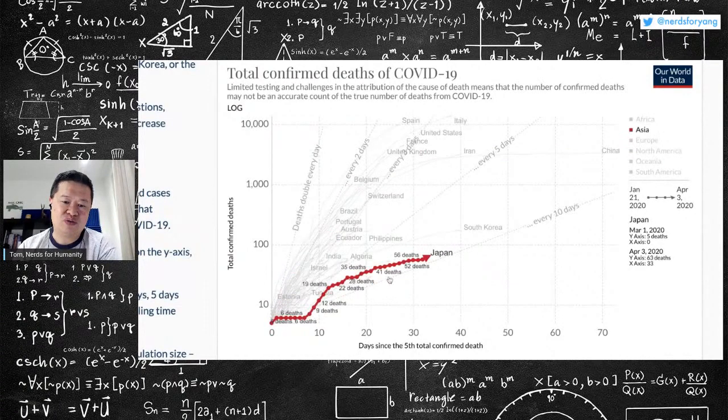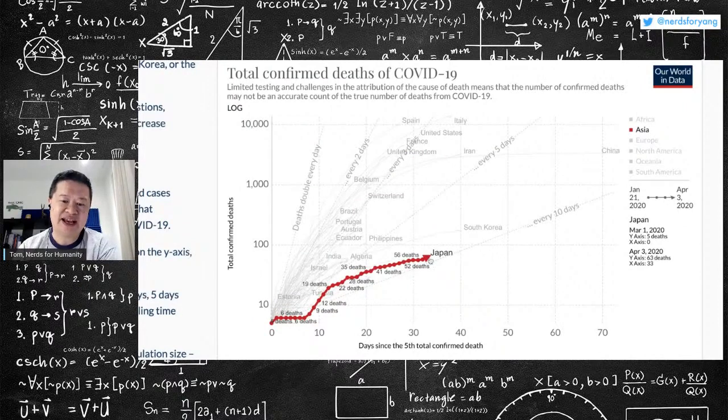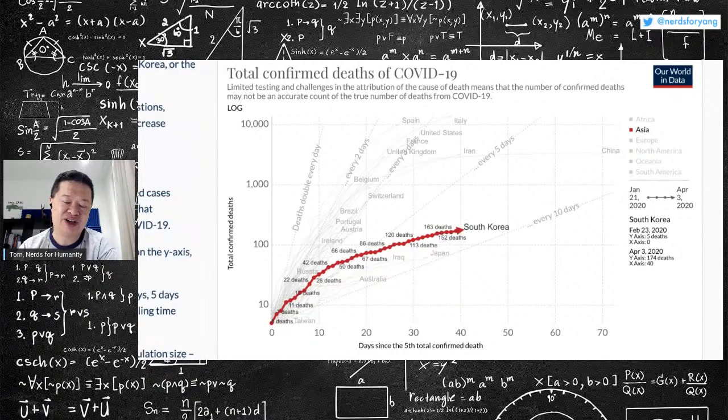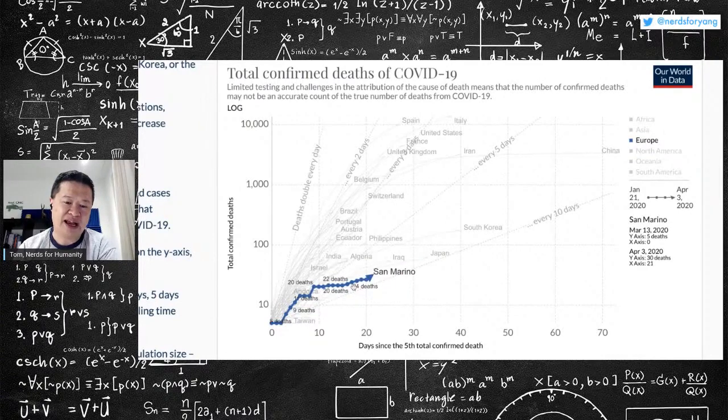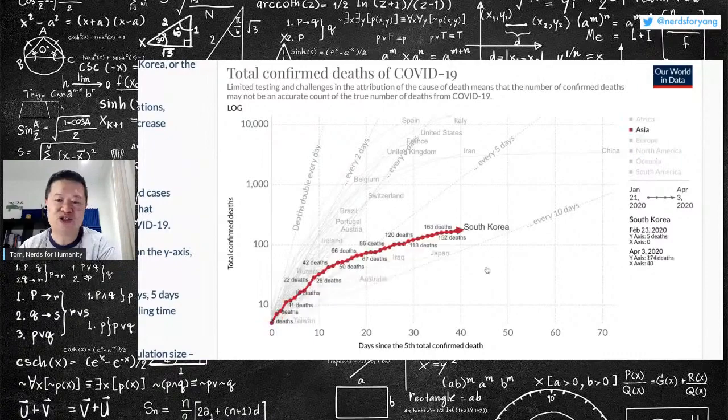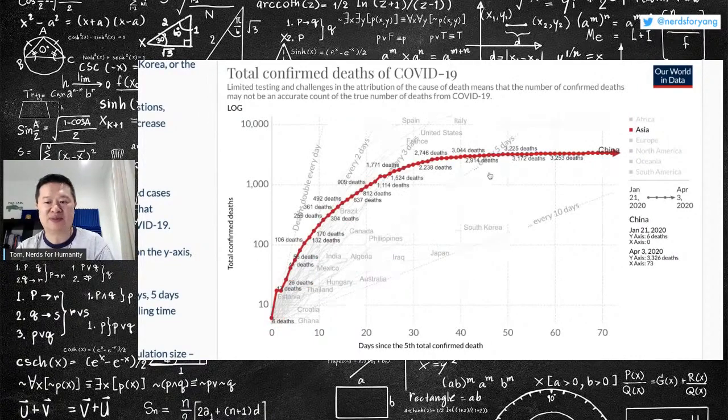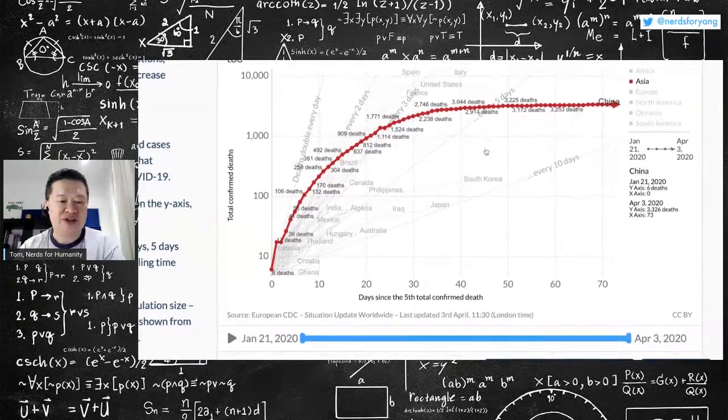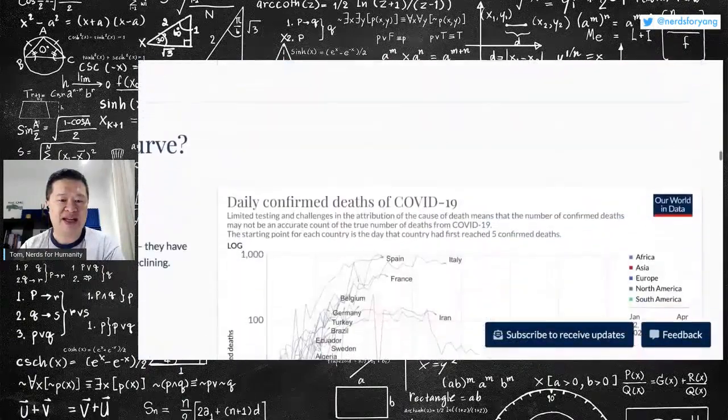And then if you double every ten days or a week, you're like Japan. South Korea is a little better, like every seven days. Australia is not looking bad. Basically, you want this line to be as flat as possible.